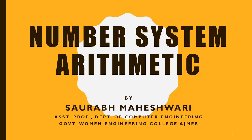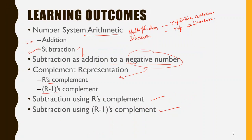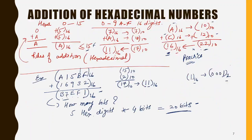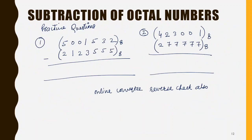Hello students, myself Saurabh Manishwari and I welcome you all to the ongoing series of lectures on number systems. The topic we are covering is number system arithmetic. Till now we have covered addition and subtraction operations, and we have also seen how multiplication and division can be performed by repetitive additions and repetitive subtractions respectively. Then we saw subtraction as addition of a negative number, and to represent a negative number we have seen sign magnitude and sign bit representation, as well as r complement and r minus one complement methods.